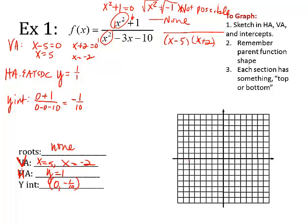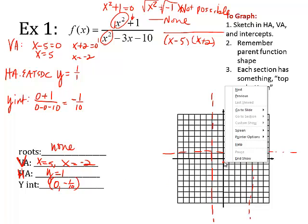All right. So now I'm going to graph what I know. Now, there are no roots, so that's important to remember as we graph. Vertical asymptotes are going to be at x equals 5, x equals 5, and negative 2. Okay, and then a horizontal asymptote at y equals 1. Y-intercept is at 0 and negative 1 tenth, so it's just barely under the origin, but it's there.